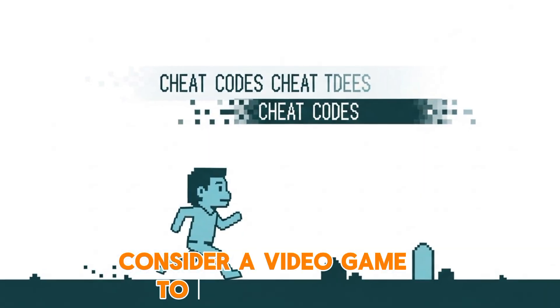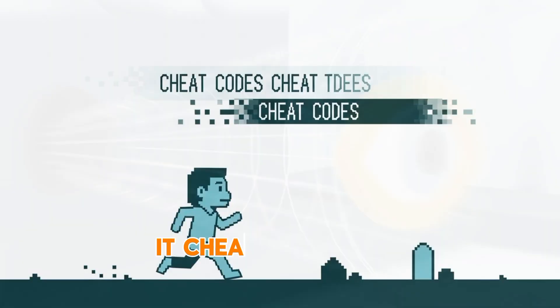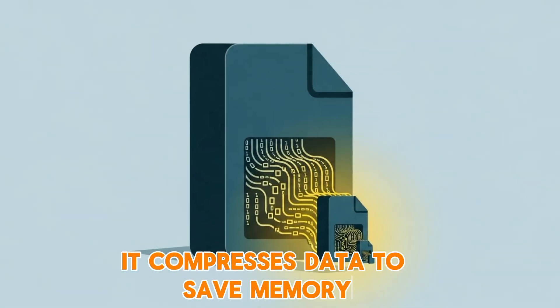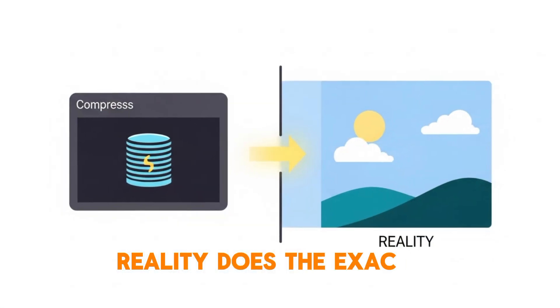Consider a video game. To run smoothly, it cheats. It only renders what you are looking at. It compresses data to save memory. Reality does the exact same thing.